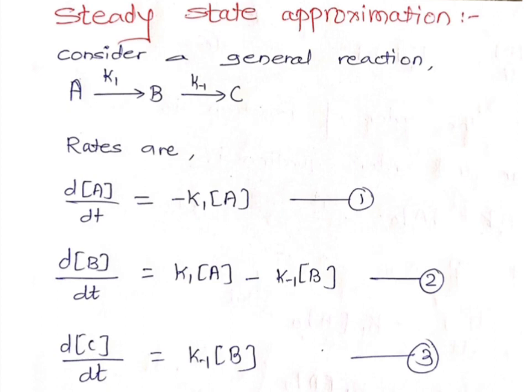The first rate constant is K1 by which A gives B, and B gives C with rate K-1. So A is the reactant, B is the intermediate, and C is the product. We have to find out the rate of change of concentration of intermediate B with respect to change in time.